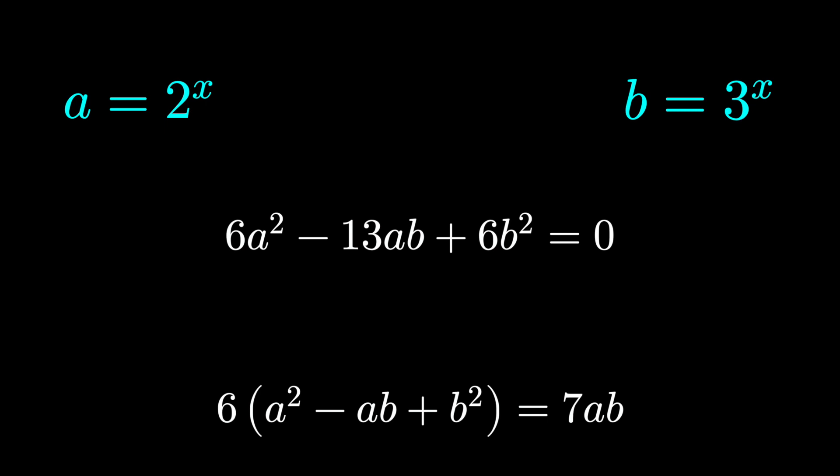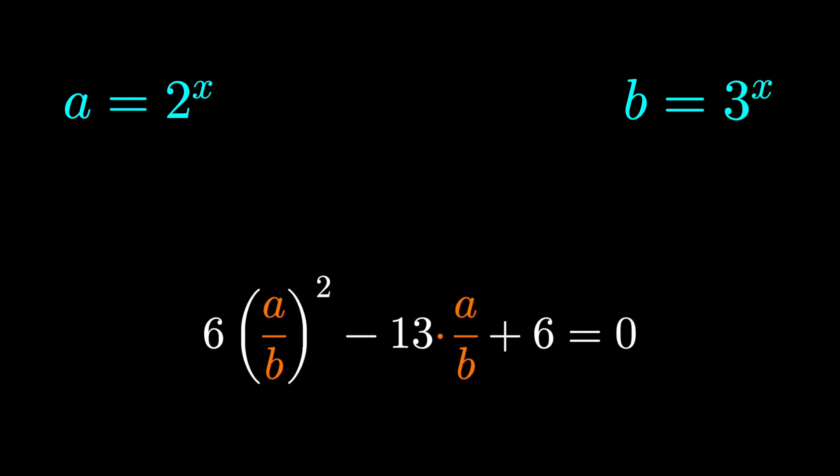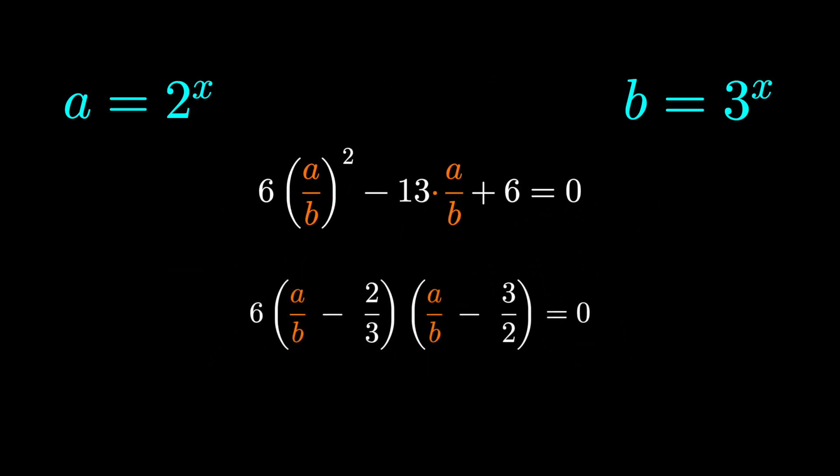The trick that I would do is divide every term by b. Again, we can divide by b since b is 3 to the x, which is never 0. We're allowed to divide by b. And setting it up like this looks like a quadratic in terms of a over b. In fact, this factors quite nicely and we have a product equaling 0. Either the first piece is 0, or the second piece is 0.